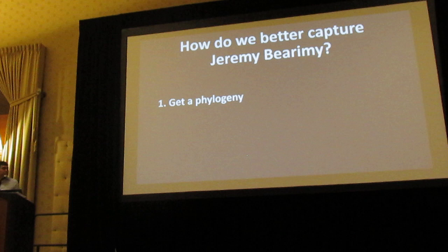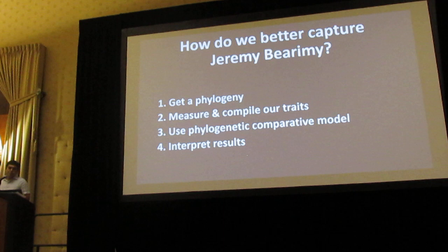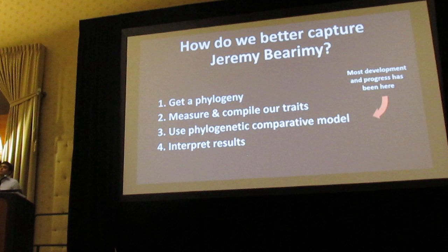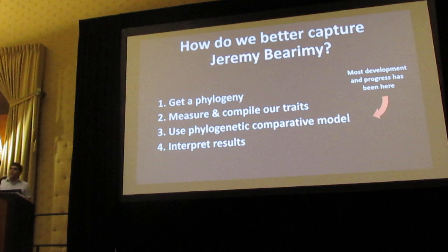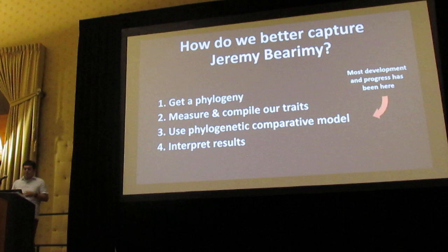How do we go about better capturing this underlying Jeremy Bearmy? When we do comparative studies, we have a process: we get a phylogeny, we measure and compile our traits, we use a phylogenetic comparative model, and we interpret our results. In the last few decades, we've really been focusing most of our attention on developing and implementing novel phylogenetic comparative models that better incorporate this underlying process that we have limited access to.